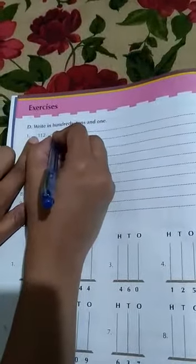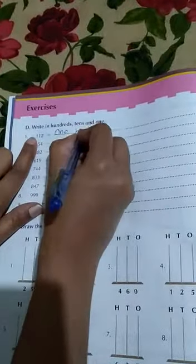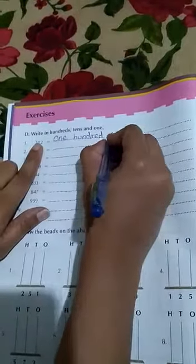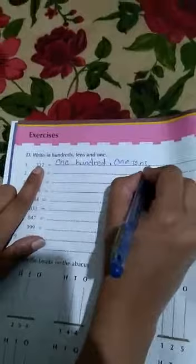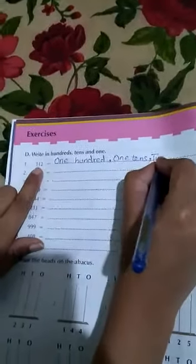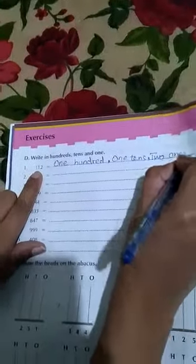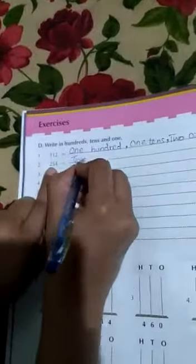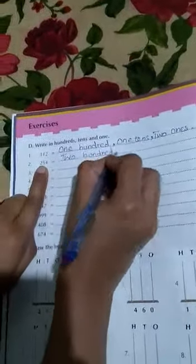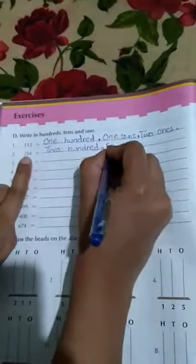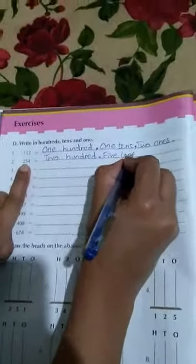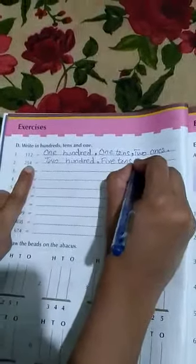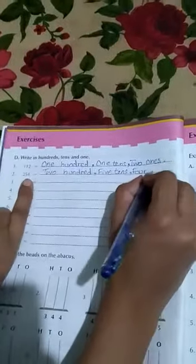1 hundred, 1 ten, and 2 ones. Isi tarah hum isko bhi likhenge: 2 hundreds, 5 tens, 4 ones.